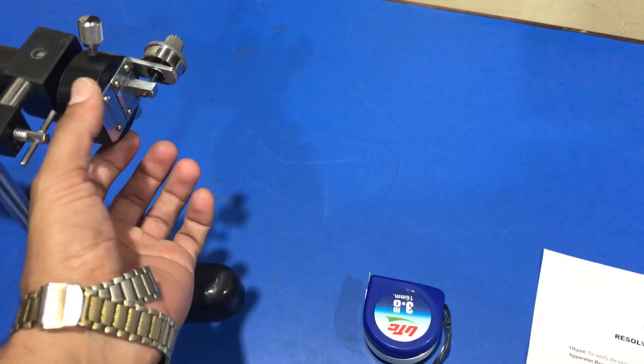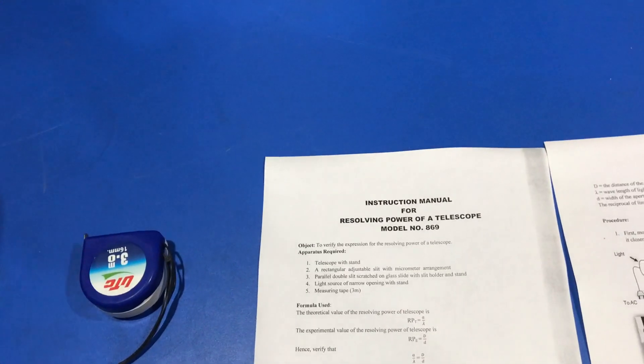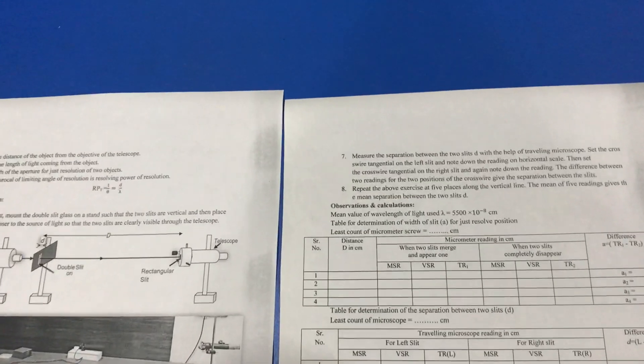At that position, we note the reading of the micrometer slit. We again close the slit till the light completely disappears and note the reading again.